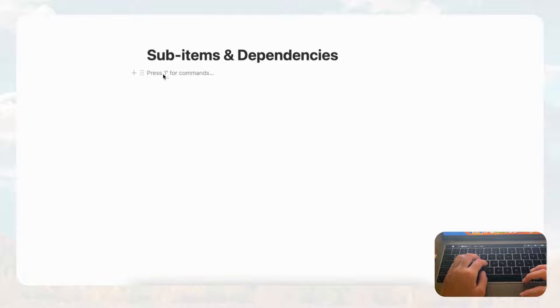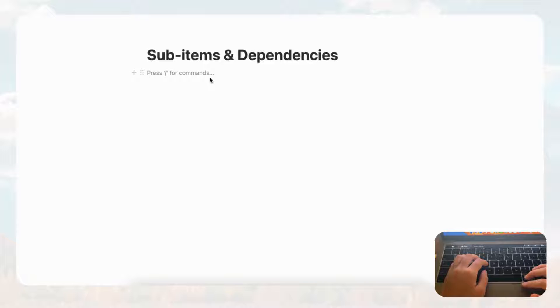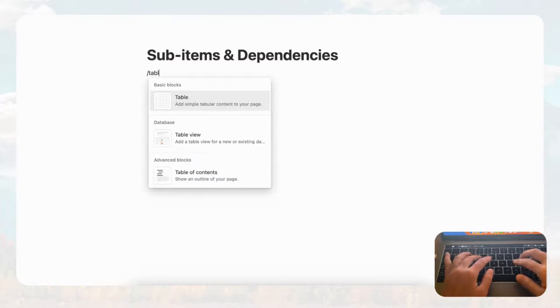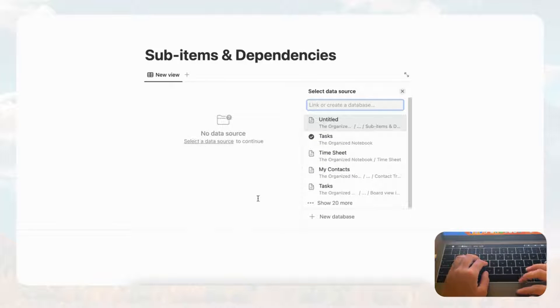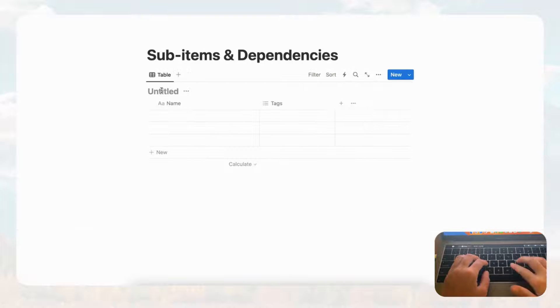First we're just going to make a database, because without a database we cannot do anything like sub items or dependencies. We're going to start with a table view because it's one of the most simple database views in Notion. Go ahead and type slash table, choose table view and new database, and we'll just name this 'Sample Database.'